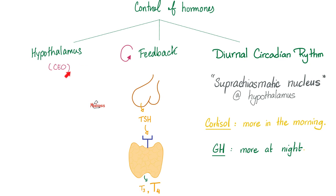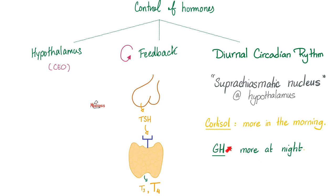Who controls the endocrine system? The hypothalamus does. Feedback mechanisms do. And diurnal circadian rhythm — some hormones are secreted more in the morning, others more at night. Why secrete cortisol more in the morning? Because it's a stress hormone; it helps counteract stress, and mornings are more stressful. Growth hormone is for growth — children grow more at night because they're lying flat and the effect of gravity is negligible. The brain knows if it's morning or night because the suprachiasmatic nucleus of the hypothalamus is connected to your eyes. Lots of light means morning; no light means sleeping.